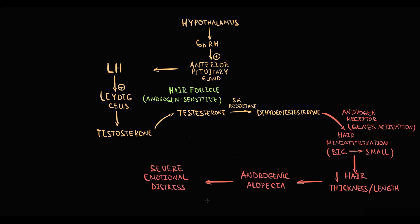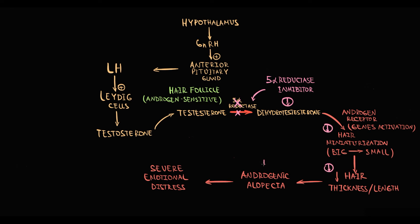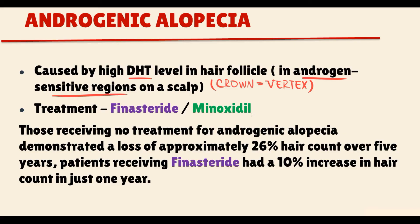To solve this problem, we have to decrease the effect of dihydrotestosterone on the hair follicle by reducing its production. When we prescribe a 5-alpha reductase inhibitor, it blocks the 5-alpha reductase enzyme, decreasing conversion of testosterone into dihydrotestosterone. With less dihydrotestosterone in the hair follicle, miniaturization stops and androgenic alopecia is prevented. The two most common first-line treatments for male pattern hair loss are topical minoxidil and oral finasteride, with finasteride considered the most powerful agent.